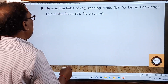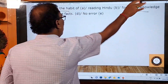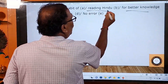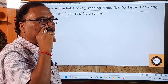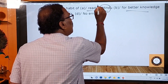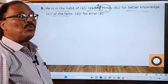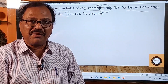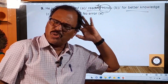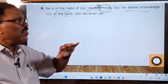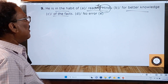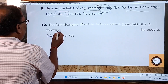Ninth sentence: 'He is in the habit of reading Hindu for better knowledge of the facts.' The parts 'he is in the habit of', 'for better knowledge', and 'of the facts' have no error. But 'reading Hindu' has a mistake — before the names of newspapers we must use the definite article 'the'. So it must be 'reading the Hindu', just as we say 'the Times of India', 'the National Herald'. The article is missing, so that part has the error.